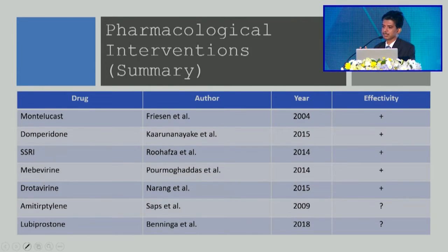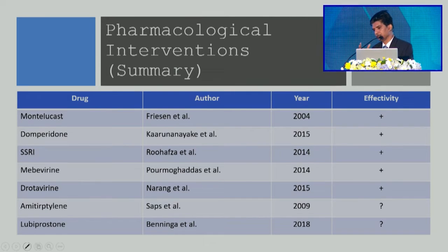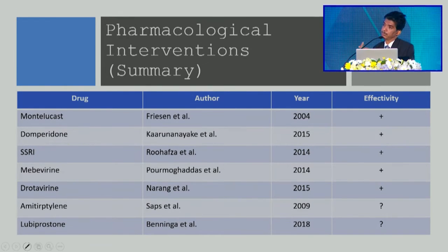Looking at pharmacological interventions: montelukast has some efficacy; domperidone — we conducted a trial and found it effective in treating children with functional abdominal pain disorders. SSRIs, mebeverine, and drotaverine are also effective. I know adult gastroenterologists use amitriptyline for adults, but in children two clear randomized controlled trials failed to show any therapeutic benefit. A third trial is still in the pipeline with some open-label evidence of efficacy, but due to its open-label nature the findings are questionable.